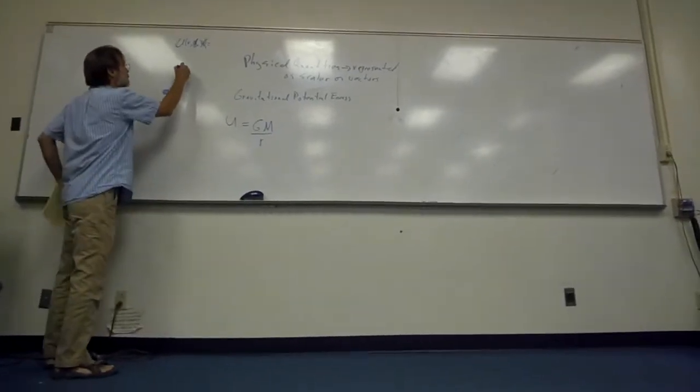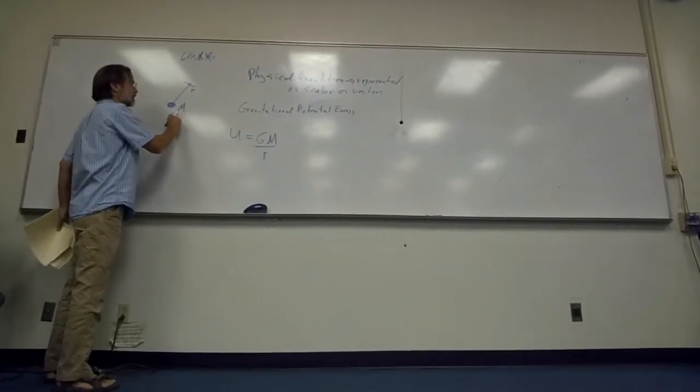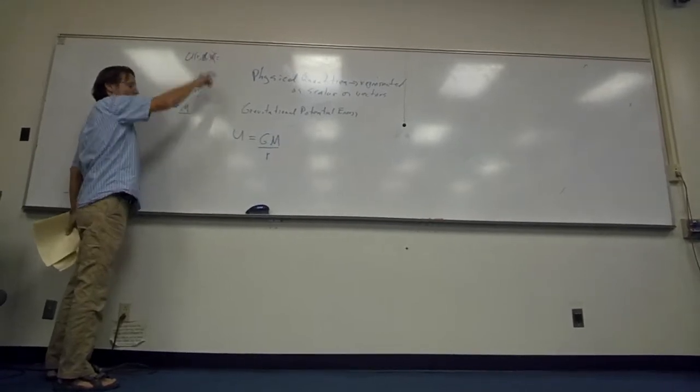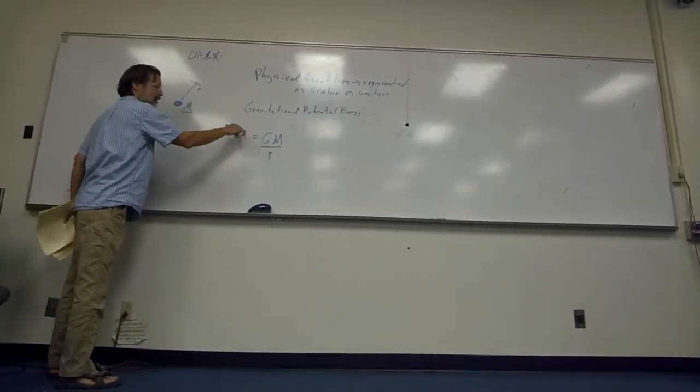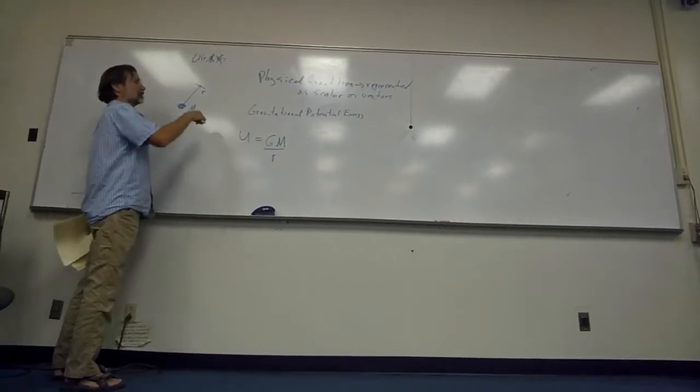So the potential energy varies as 1 over R relative to this mass, M. So the farther you go away, this number gets bigger, so this number gets smaller, actually gets bigger.